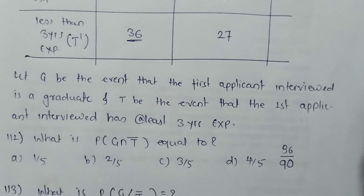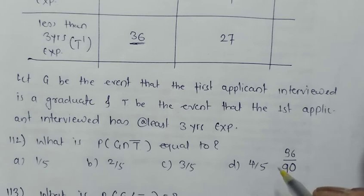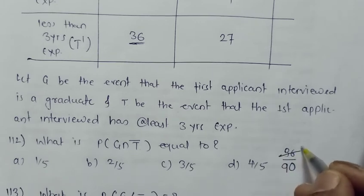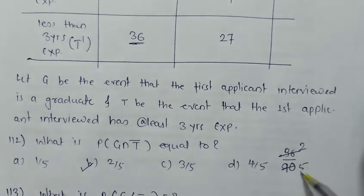So the answer to this question is 36 divided by 90, which simplifies to 2 by 5. Here 18 times 2 is 36 and 18 times 5 is 90.